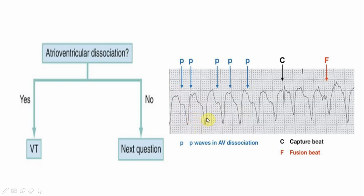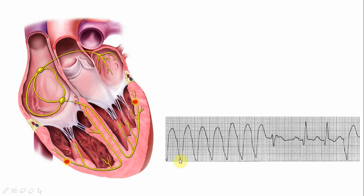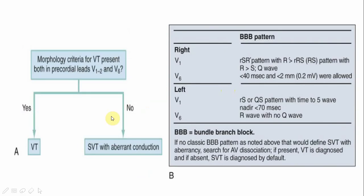As shown in this image, the atrial activity is in its own 'bubble' within the atria and the ventricular activity is in its own 'bubble' within the ventricle — they maintain social distancing. Sometimes cardiac impulses manage to travel to the ventricle, forming fusion beats and capture beats. These are very characteristic features of VT. If AV dissociation is not found, we proceed to Step 4: morphological characteristics.